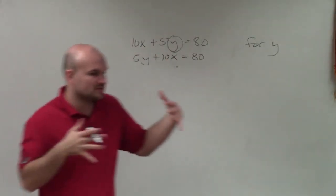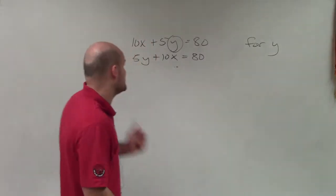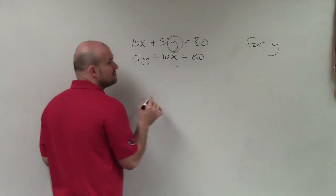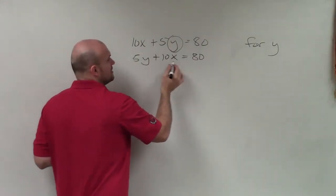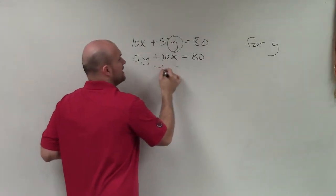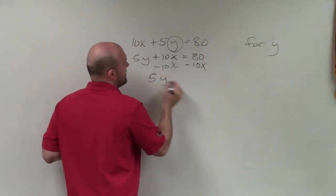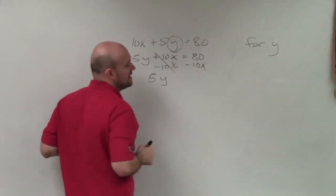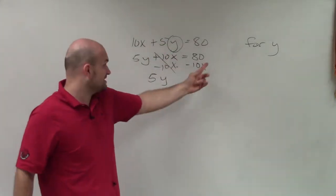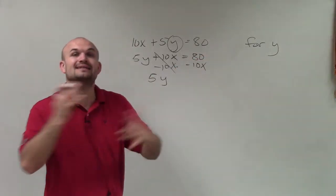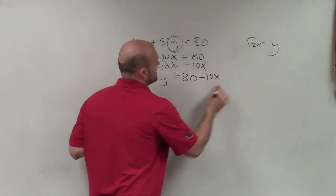So when we're solving, we need to make sure we use our reverse order of operations, meaning I need to undo addition and subtraction first. Since my y is being added to 10x, or 10x is being added to my y, I'm going to subtract 10x. Therefore I have 5y. That subtracts to 0. Now, 80 and negative 10x are not like terms — this has an x, this does not have an x — so we cannot combine them. So I can write this as 80 minus 10x.